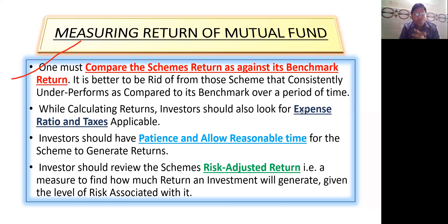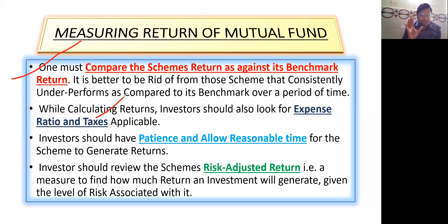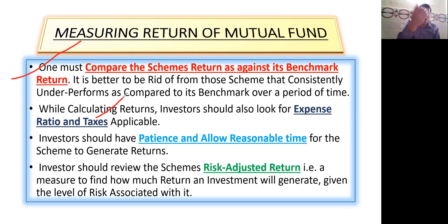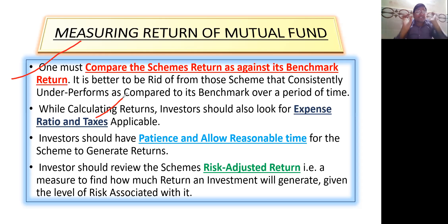While calculating returns, investors should also look at the expense ratio and taxes applicable — whether direct or indirect tax. If the expense ratio is high, your return will automatically be lower. Brokerage services also attract indirect tax, which reduces your return. Always consider expense ratio and taxes when calculating returns.